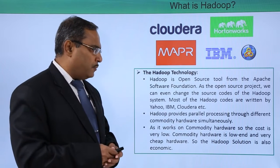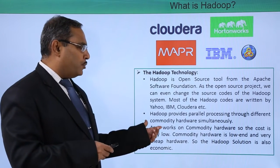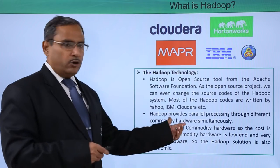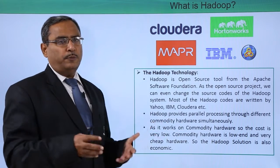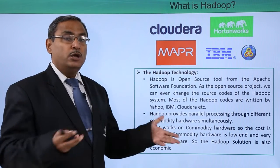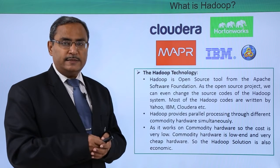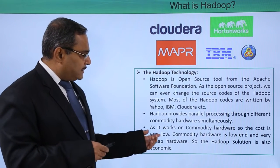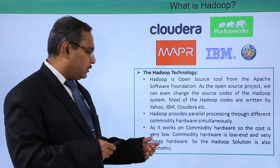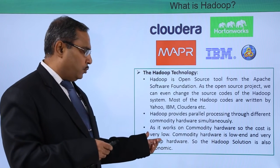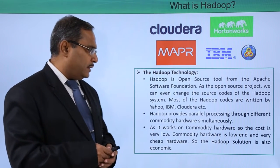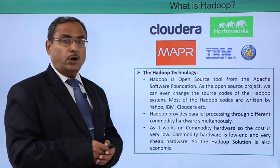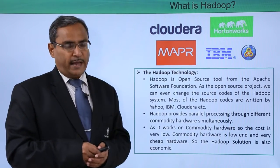Hadoop provides parallel processing through different commodity hardware simultaneously. Commodity hardware means cheap hardware, with the help of which we can have parallel processing. So, the data processing and analysis will be done in a very fast way. As it works on commodity hardware, the cost is very low — commodity hardware is low-end and very cheap. So, the Hadoop solution is also economic and cheap.